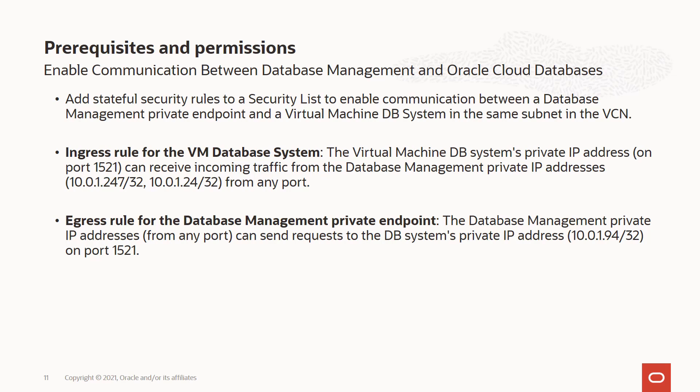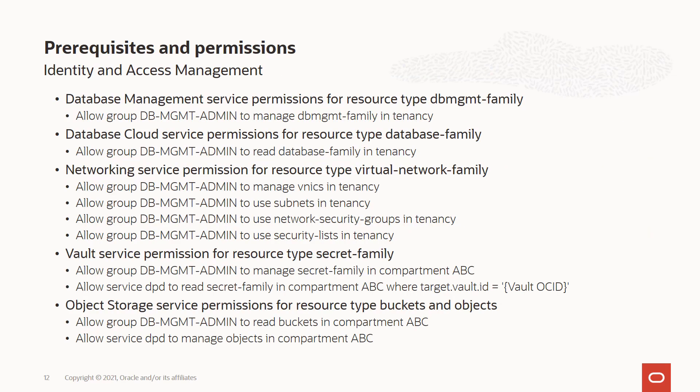Before proceeding with the security rules and creating the private endpoint, you should make sure that you have the proper Identity and Access Management privileges for accessing database management. You should have permissions on DB management, and permissions on the DB management family resource type for reading database cloud services. You need a read permission on the database management in tenancy or in compartment, which is the resource type for your cloud databases. For networking, you need permissions for managing VCNs, using network security groups, and using security lists. You may also need to work with your network administrator for these permissions within your VCN.